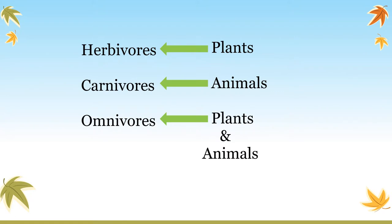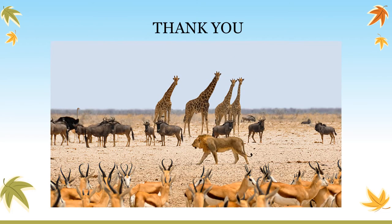Let us now quickly revise what we have learned. Based on their food habits, animals are divided into three groups: herbivores, carnivores, and omnivores. Those animals which depend on other animals for food are called carnivores. Those which depend on both plants and animals are called omnivores. Thank you, children — hope you understood the concept well.